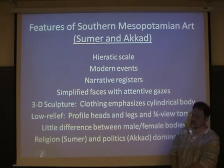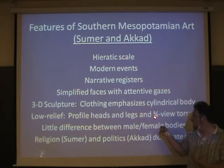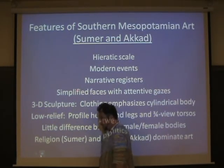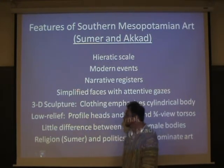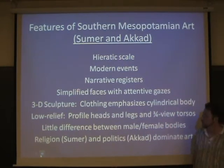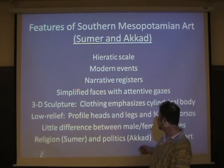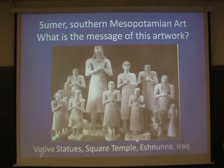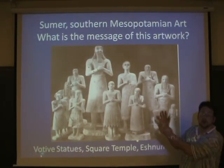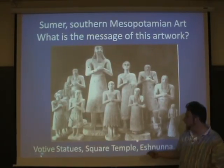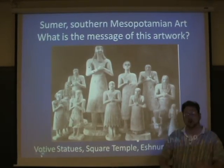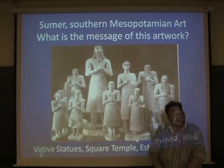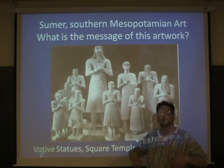In 3D sculpture, we have clothing that emphasizes the cylindrical body shape, and low-relief profile heads and legs with three-quarter view torsos — the face looking forward, feet looking forward, torsos turned. We see this a lot later in Egyptian art. There is very little difference between male and female bodies. In Sumer, religion dominates the art, while in Akkad it shifts to political designation. I do a visual thinking strategy where students look at votive statues from the Square Temple of Eshnana in Iraq, discussing the staring eyes, prayer postures, upright postures, and the cylindrical shape.